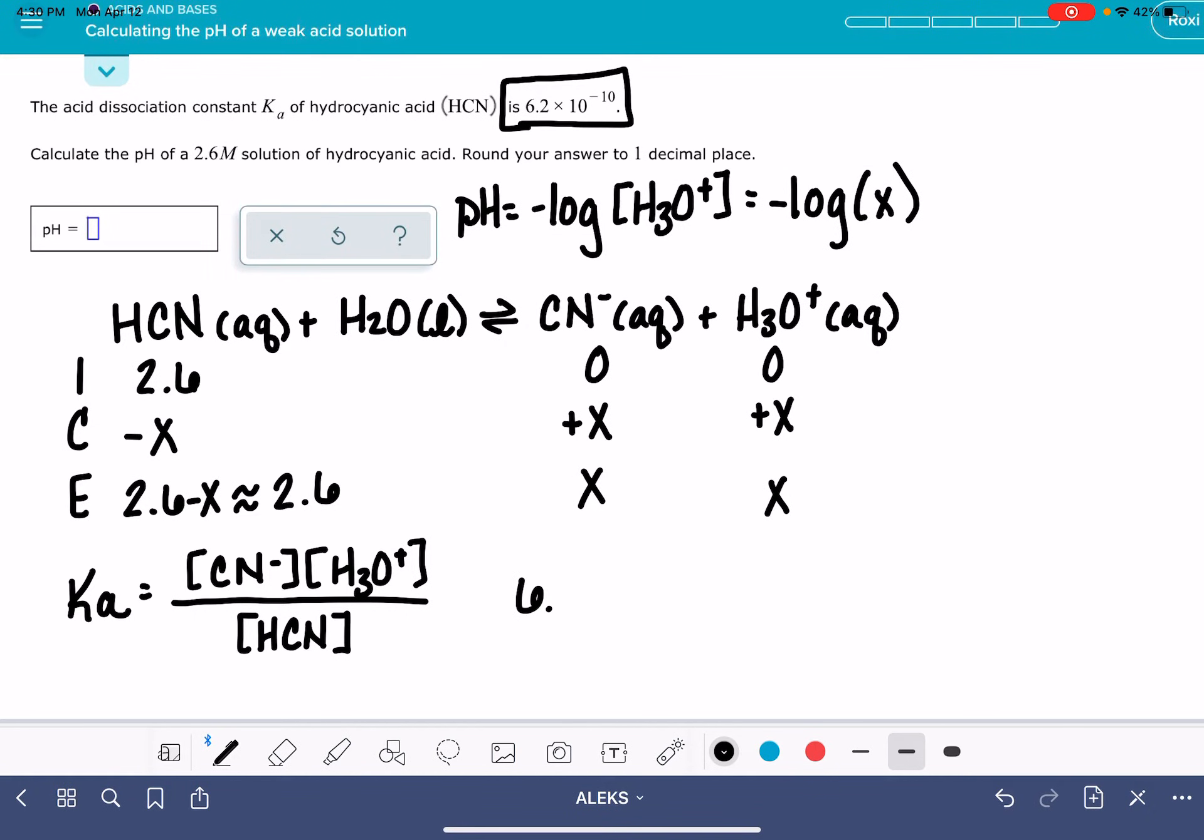We're going to plug in our value of Ka, 6.2 times 10 to the minus 10. We're going to use X for the concentrations of our two products. So that'll be X squared divided by the concentration of the HCN at equilibrium, which is 2.6.